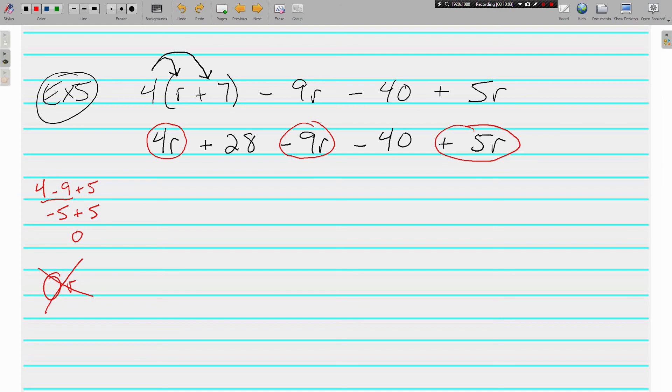So let's combine our other like terms. We have positive 28 and negative 40. Positive 28, negative 40. Negatives are going to win by 12. And we didn't have any r's, so that's it. That's our simplified expression is negative 12.